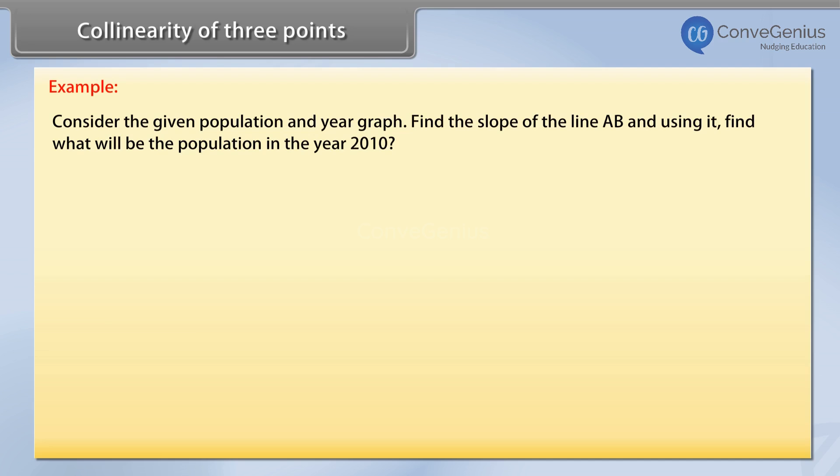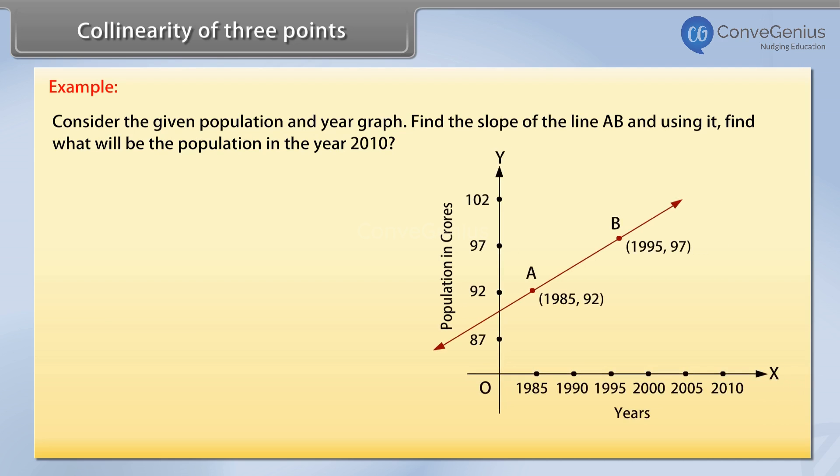Consider the given population and year graph. Find the slope of the line AB and using it find what will be the population in the year 2010? Solution: Since line AB passes through points A,